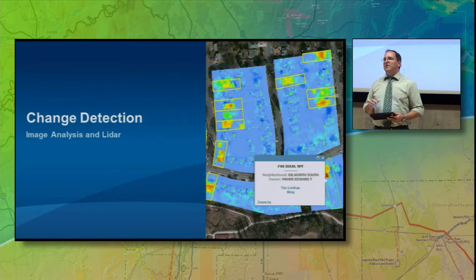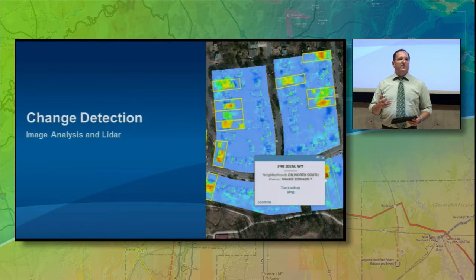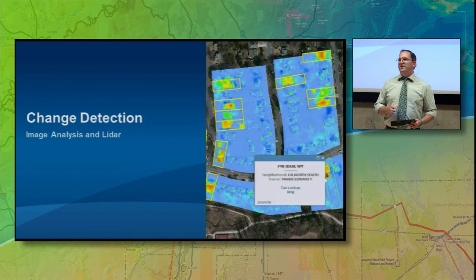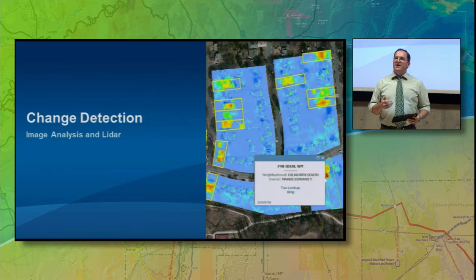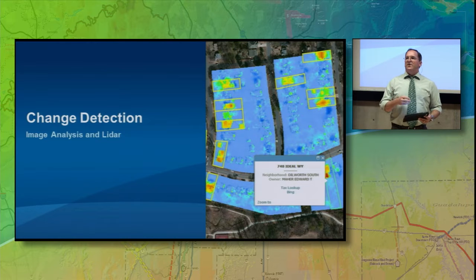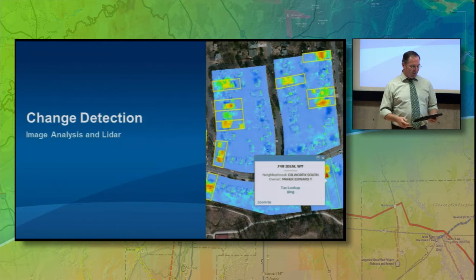Change detection allows you to identify what's changed in an area over two or more time periods. This can be useful in a number of situations, but one would be within an assessor's office. An assessor's office could use LiDAR and change detection to actually identify potential areas of missed revenue, which is obviously something every agency is wanting these days — finding more revenue.